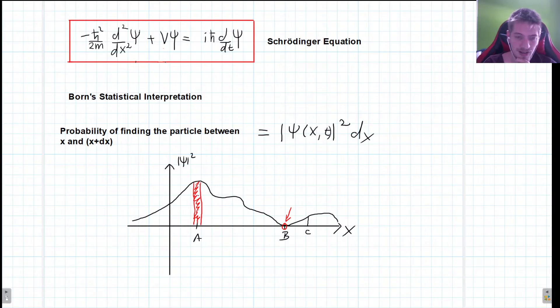Last time we began discussing the interpretation of the Schrödinger equation, and in particular we talked about Born's statistical interpretation. This wave function that you get from the Schrödinger equation will allow you to determine the probability of finding this particle between some position x and some other position x plus dx.